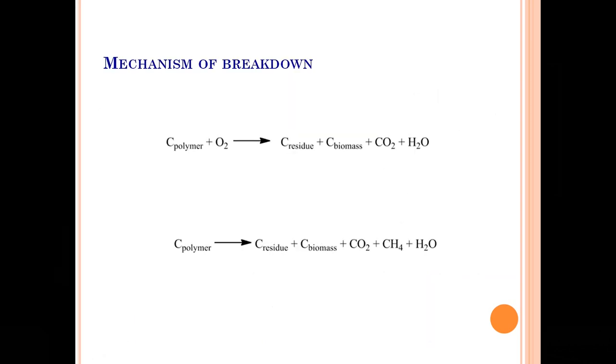Then I said biodegradable polymers undergo degradation. How exactly they undergo degradation? Now look at this, the mechanism of breakdown. It is in presence of oxygen, therefore it is called aerobic breakdown. So a polymer react with oxygen or reaction takes place in presence of air and these are the byproducts formed. Carbon residue, carbon biomass, carbon dioxide gas and water molecules.